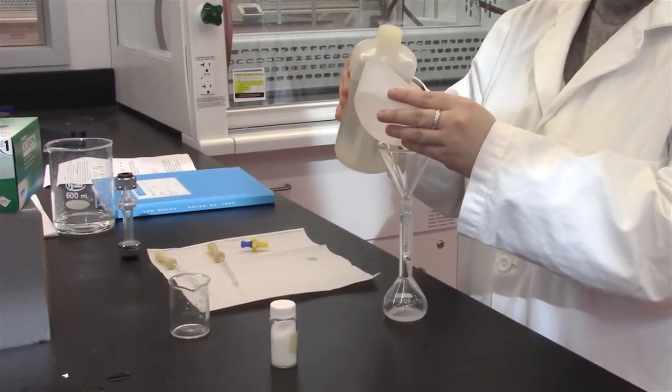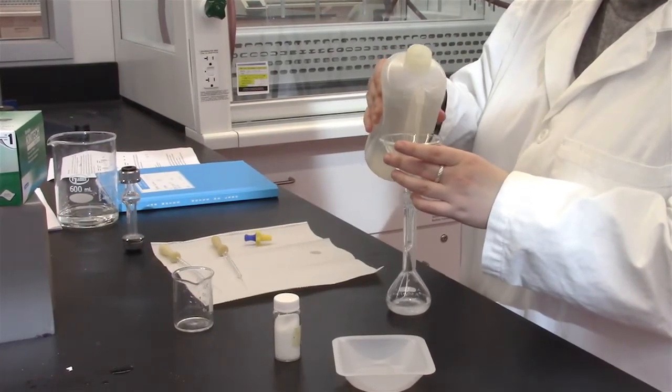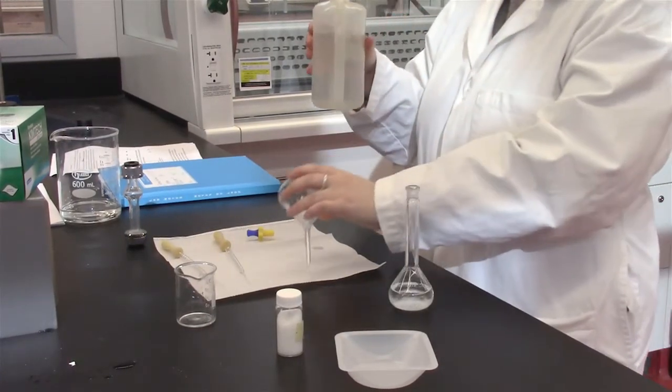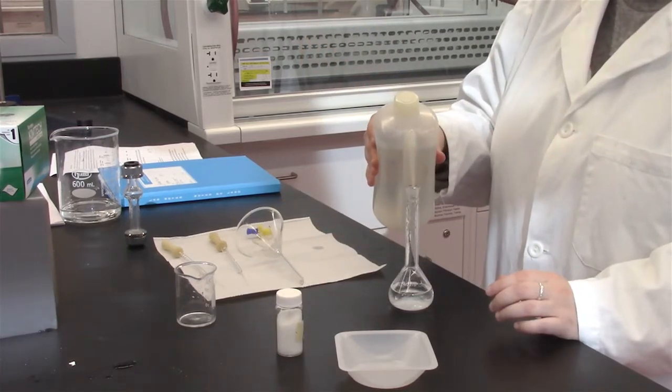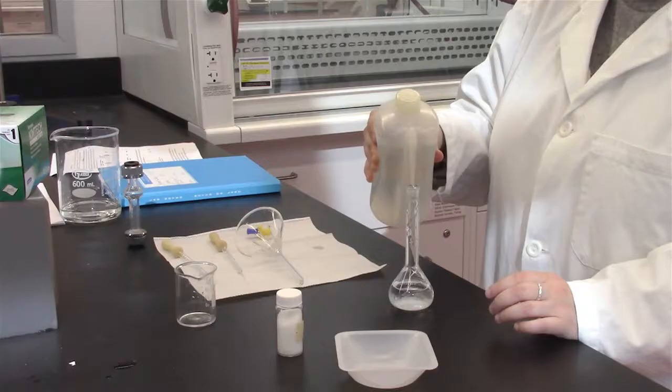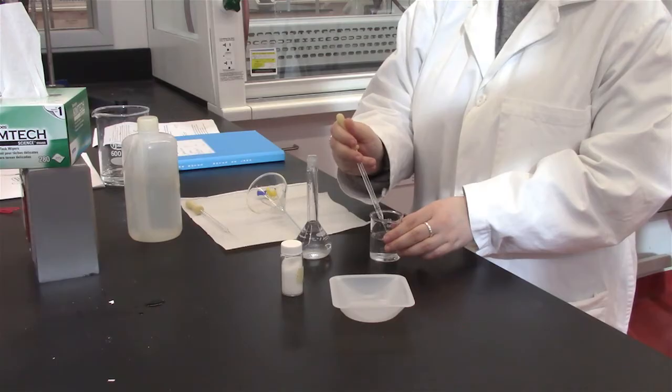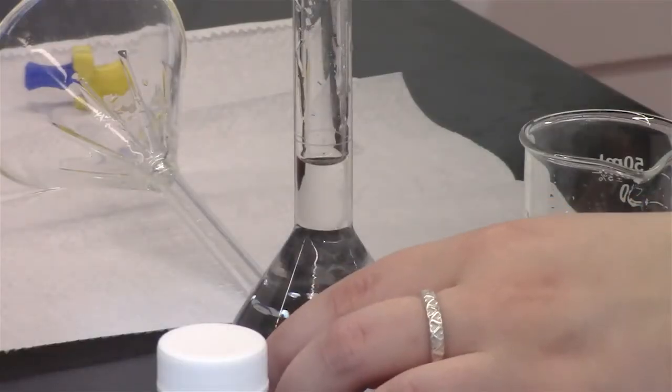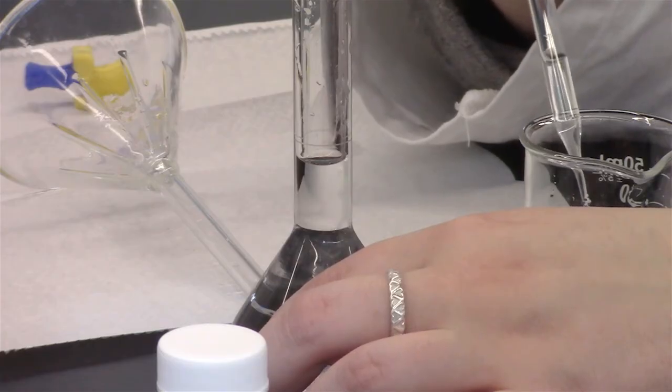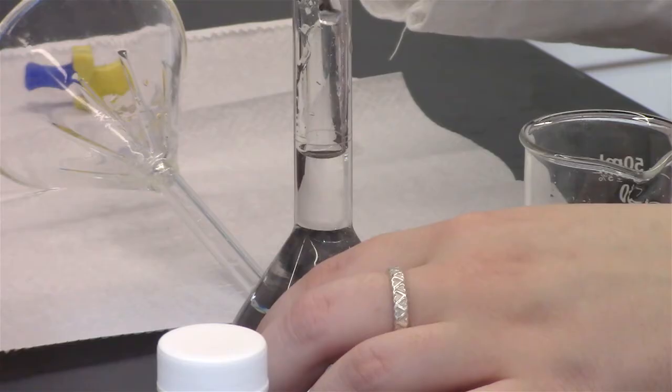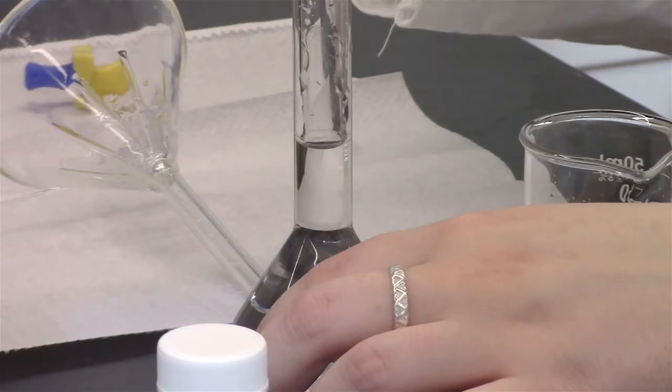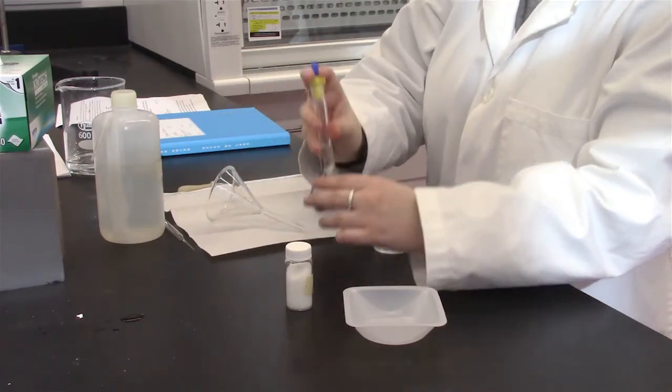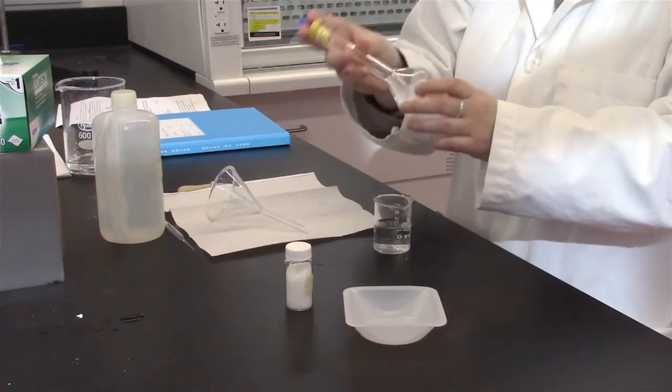Rinse the weighing tray and funnel using deionized water. Using deionized water, fill the volumetric flask to its midpoint. Fill the volumetric flask to the line with a glass pipette. Dissolve the solid by shaking the volumetric flask up and down.